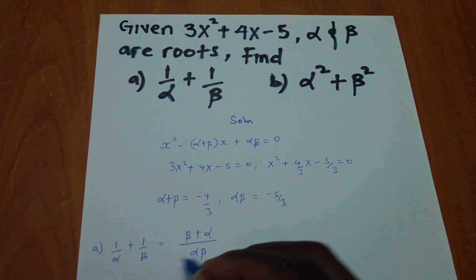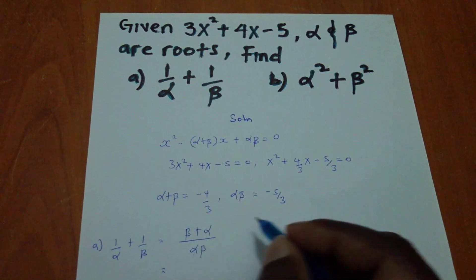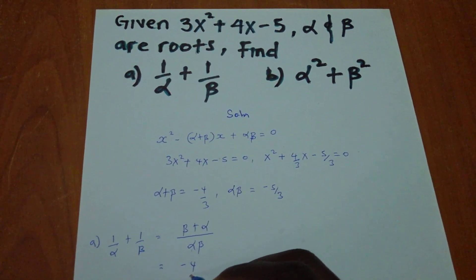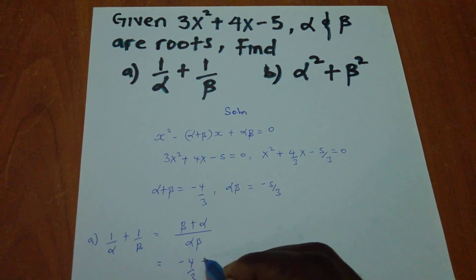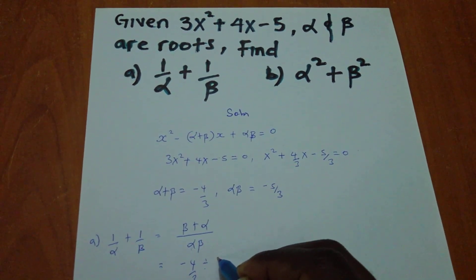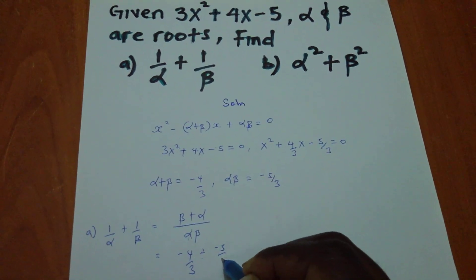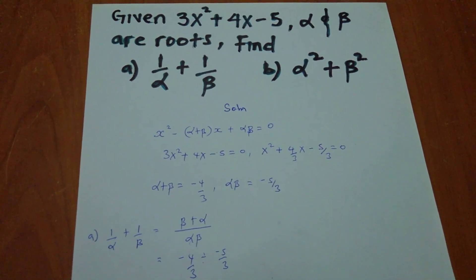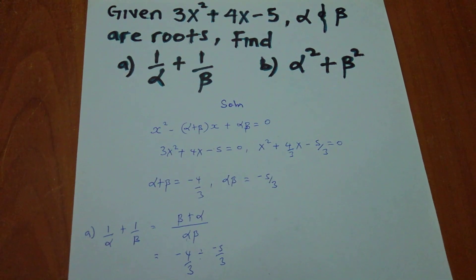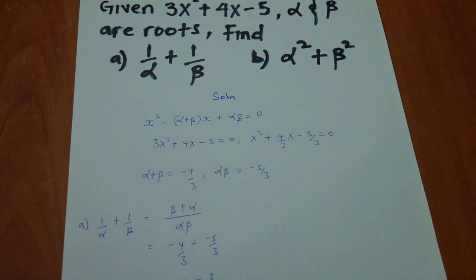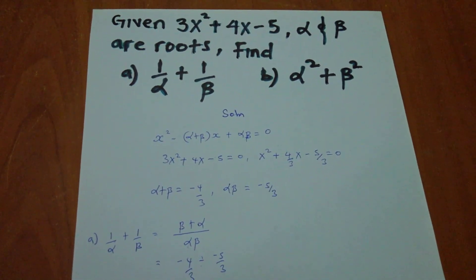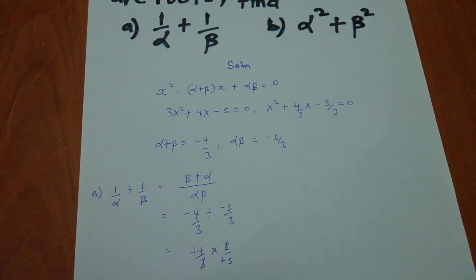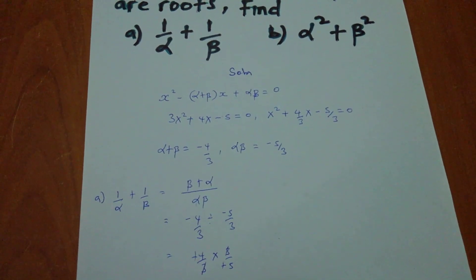And remember, this is the sum. It is -4/3 divided by -5/3. Of which, I'll get -4/3 times 3/-5. In here, the 3's will go, the negatives will go, and my answer is 4/5.